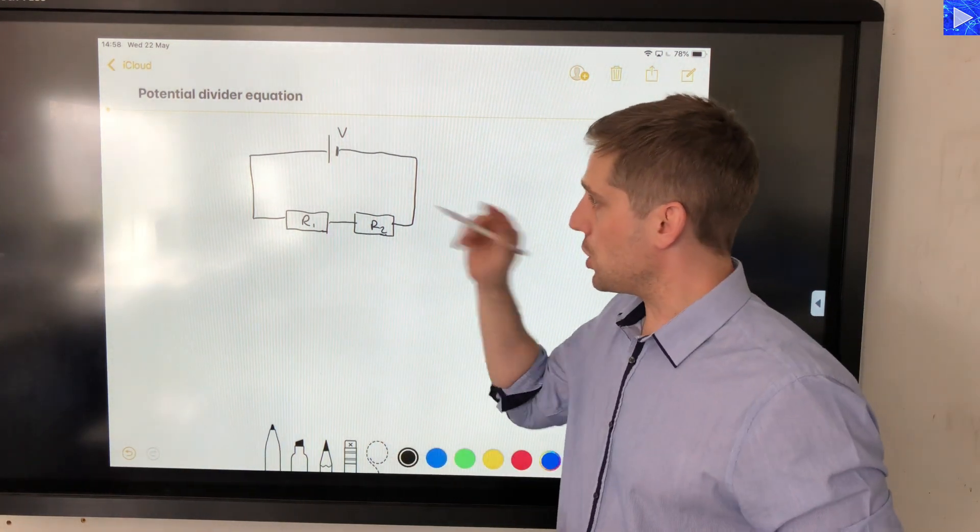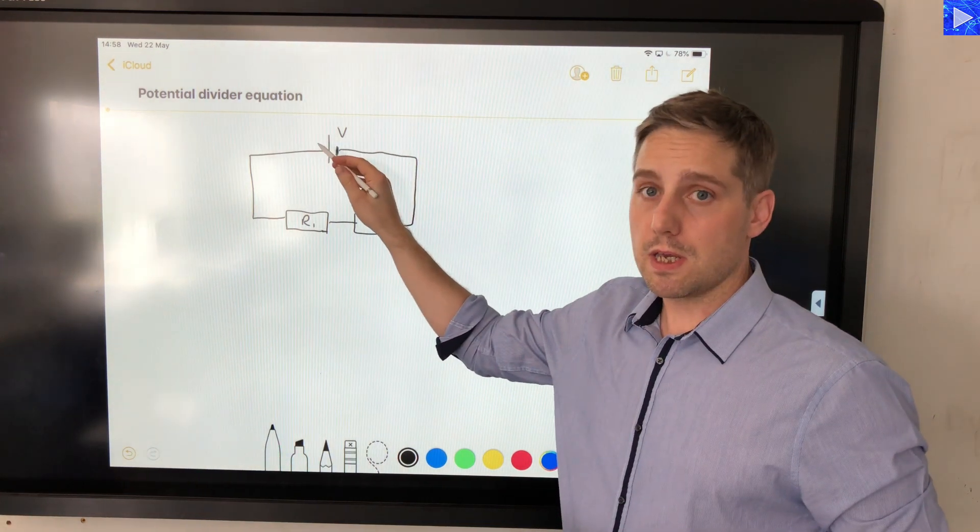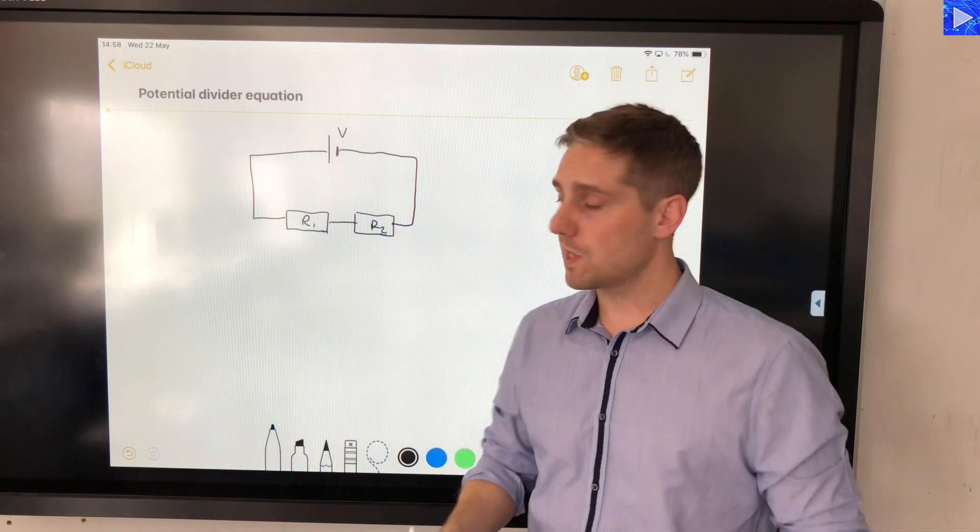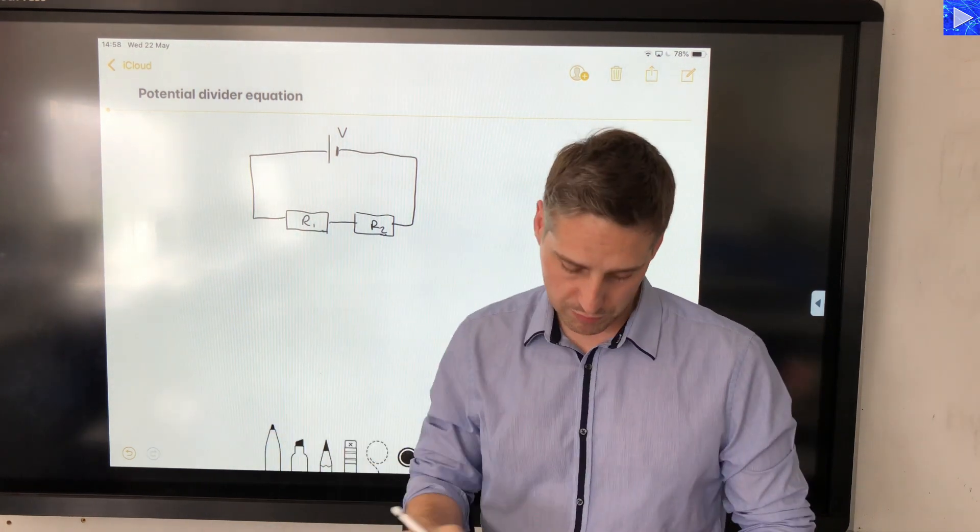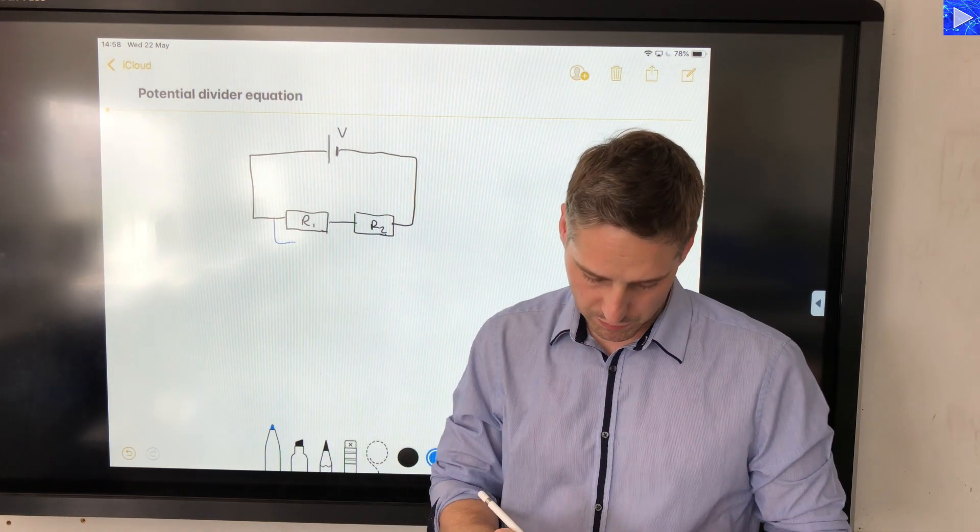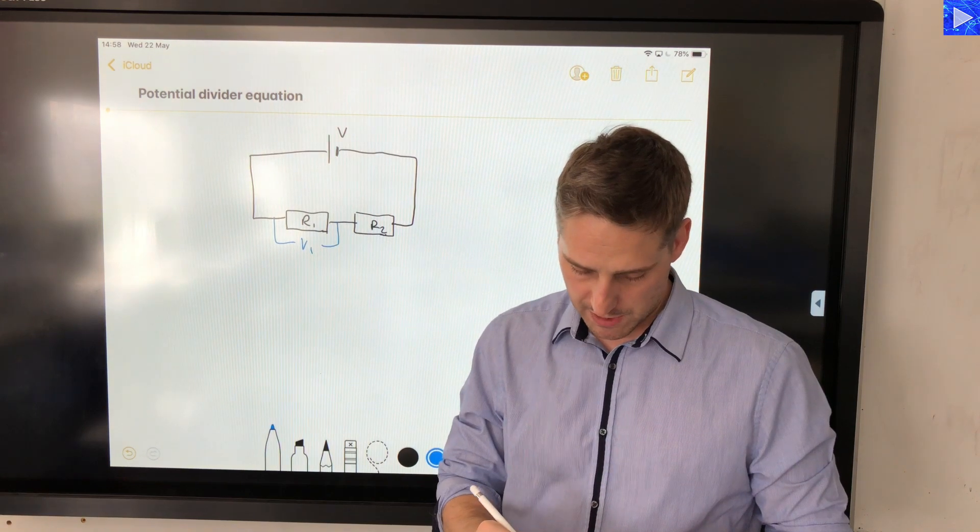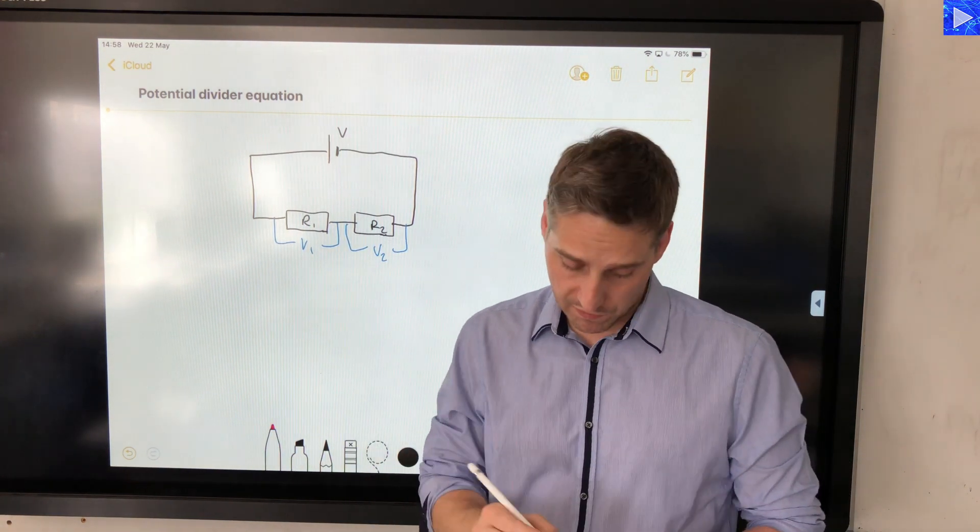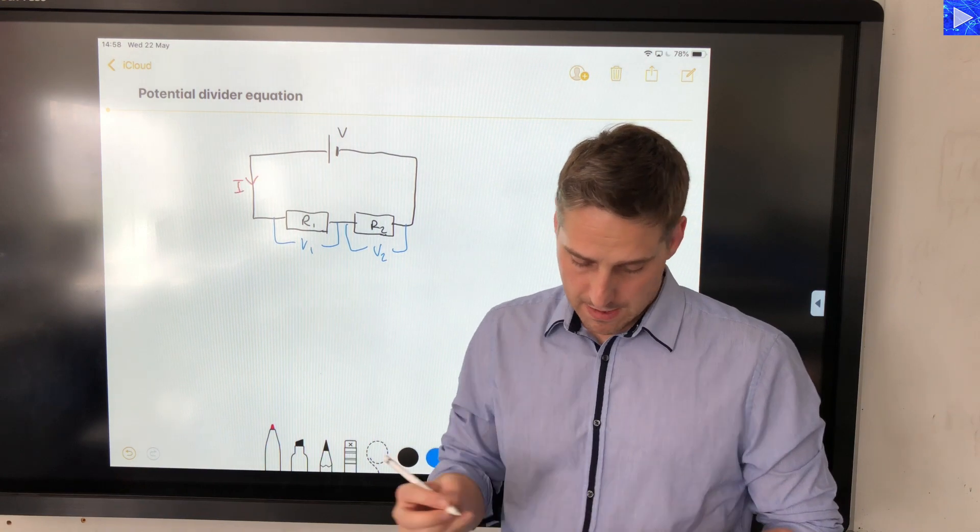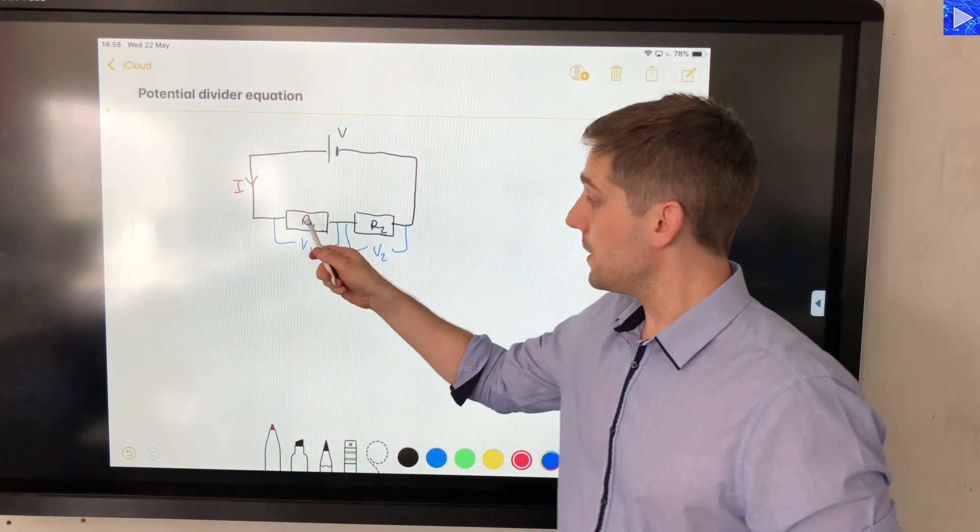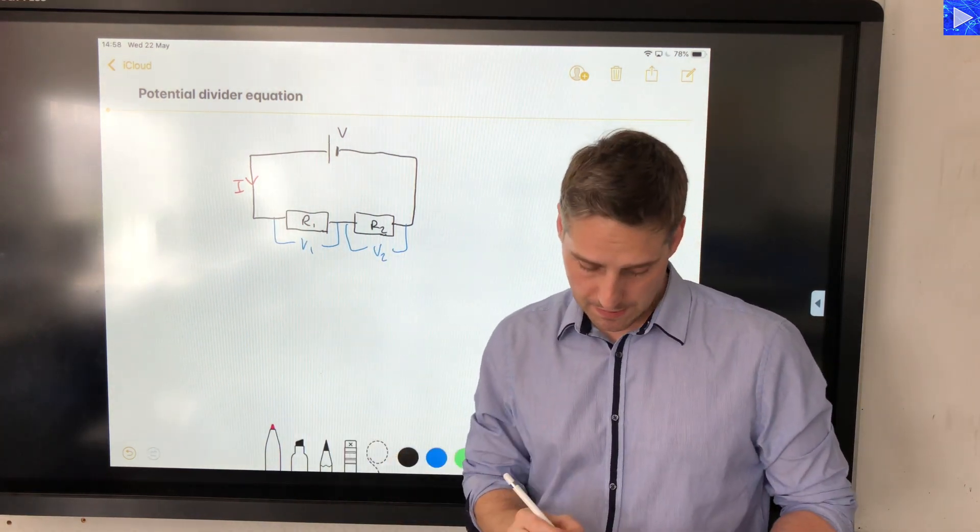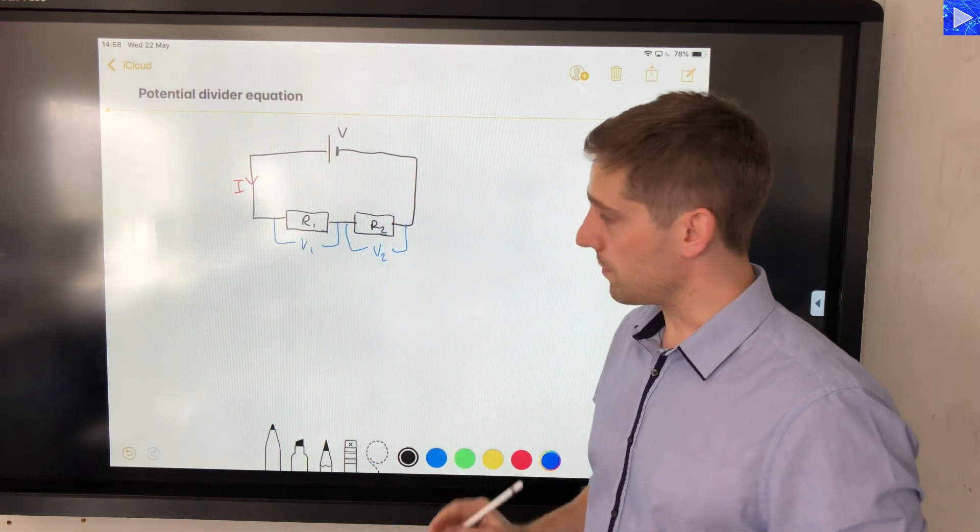What we actually know in our circuits: we know the input voltage, we know the resistances, and we want to determine V1. Let's write in things that we're interested in. We have V1 here, V2 here, and the current in the circuit we'll call I. Now because this is a series circuit, the current through R1 will be I, and the current through R2 will also be I. Same currents through everything.